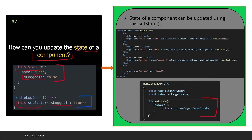In a previous example, the Employee component had three fields: name, email, and password. Using the spread operator with this.setState, whenever someone enters a value into the form, the handleChange function takes the value of that particular input and updates the employee component's state, updating all three fields: name, email, and password.